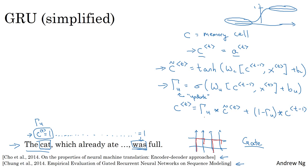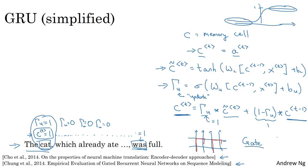The specific equation for the GRU is: C(t) = gamma_u * C̃(t) + (1 - gamma_u) * C(t-1). If the gate equals 1, it sets the new value of C(t) to the candidate value — that's when you update. For all the time steps in the middle, the gate equals 0, meaning: don't update, don't update, just hang on to the old value. When gamma_u is 0, this becomes C(t) = C(t-1), maintaining the value exactly as you scan the sentence from left to right, preserving the memory.